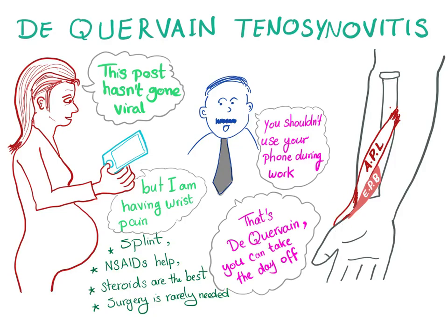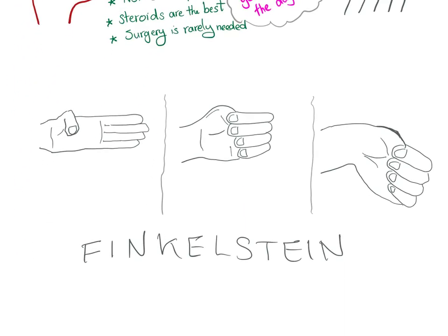There is a test to diagnose this disease called the Finkelstein test. It has three steps: number one, thumb opposition; number two, close the fist; and number three, ulnar deviation or wrist abduction. When you perform these steps, pain is elicited along this line.